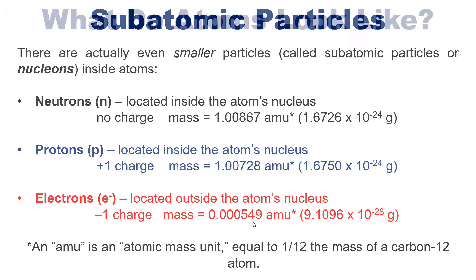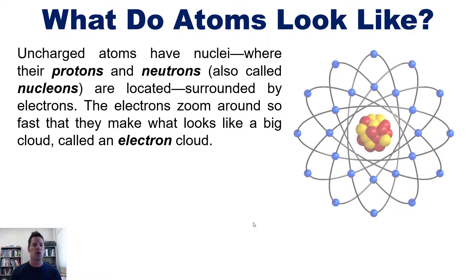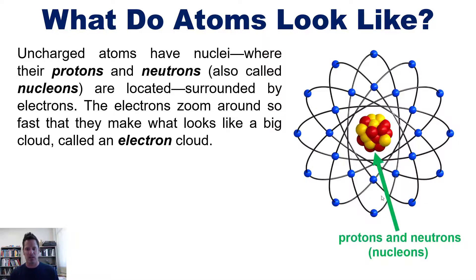So what do atoms look like? Well, uncharged atoms have nuclei or nucleuses where their protons and neutrons, also called nucleons, are located, surrounded by electrons. The electrons zoom around so fast around the nucleus that they make what looks like a big cloud called an electron cloud. In this model, you can see the protons and neutrons right here in the middle - they're represented by this little cluster in the nucleus. These smaller spheres that are zooming all around the nucleus across a larger total three-dimensional area represent electrons.